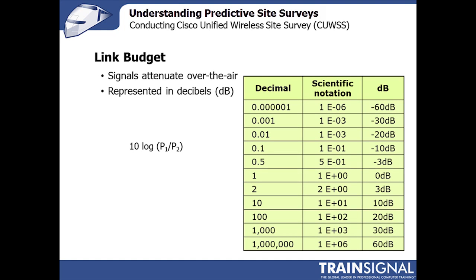Now we've talked about what happens to your signal over the air, let's talk about the link budget. To talk about a link budget we have to talk about decibels, and decibels can be incredibly confusing to people. A decibel is literally a representation of the difference between two power levels. For instance, on your home music system you may have an amplifier where power comes in, the signal is amplified, and more power leaves. That ratio between the power coming in and the power going out is represented in decibels.